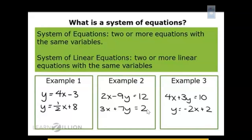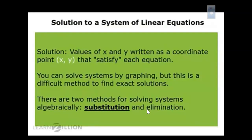A system of equations is two or more equations with the same variables. A system of linear equations is when you have two or more linear equations with the same variables. A solution to a system is the values of x and y, written as a coordinate point (x, y), that satisfy each equation. You can always solve systems by graphing, but this is difficult for finding exact solutions. There are two algebraic methods: substitution and elimination.